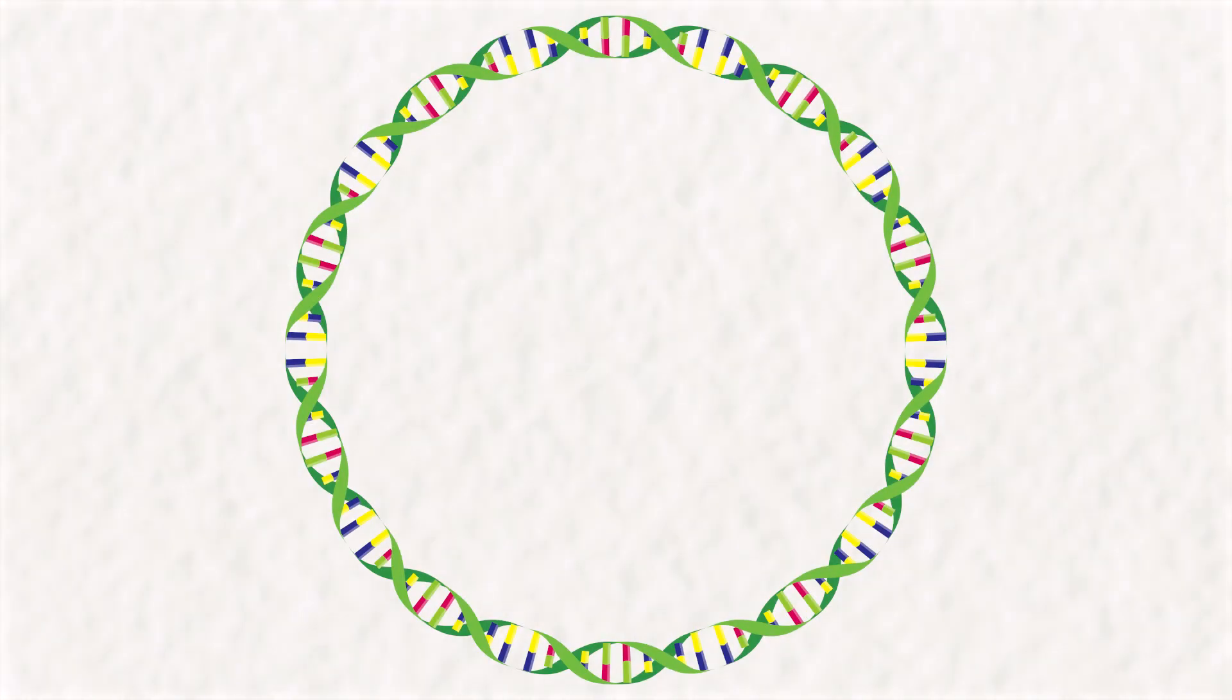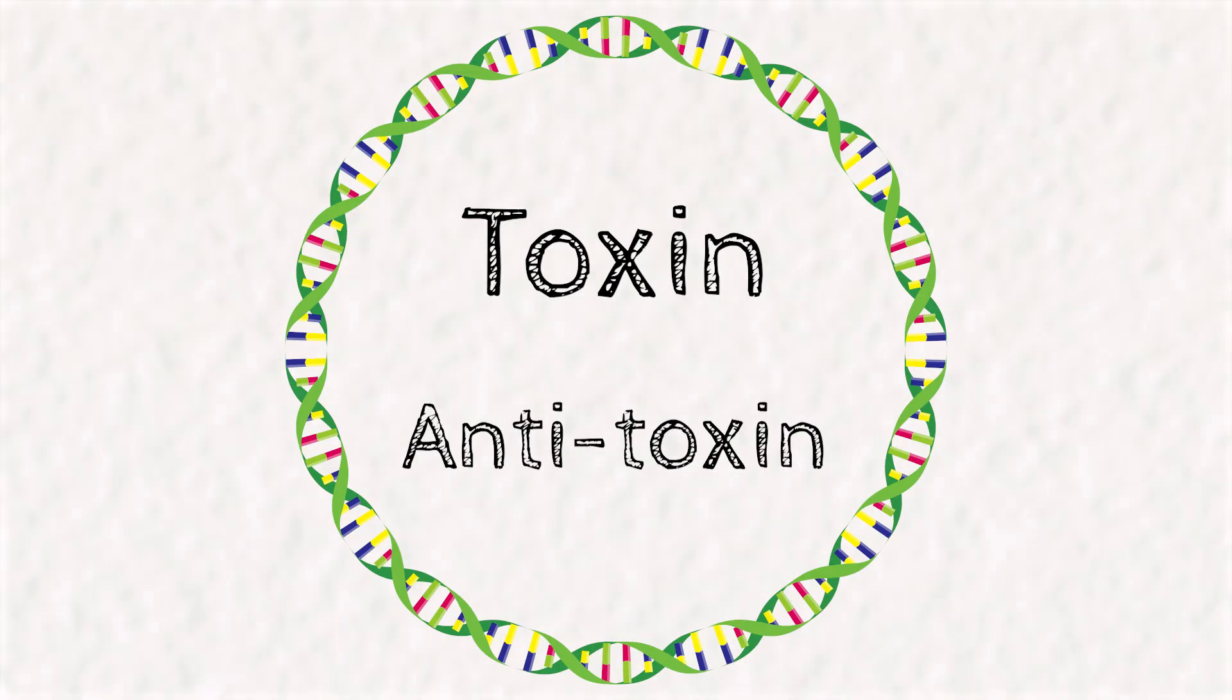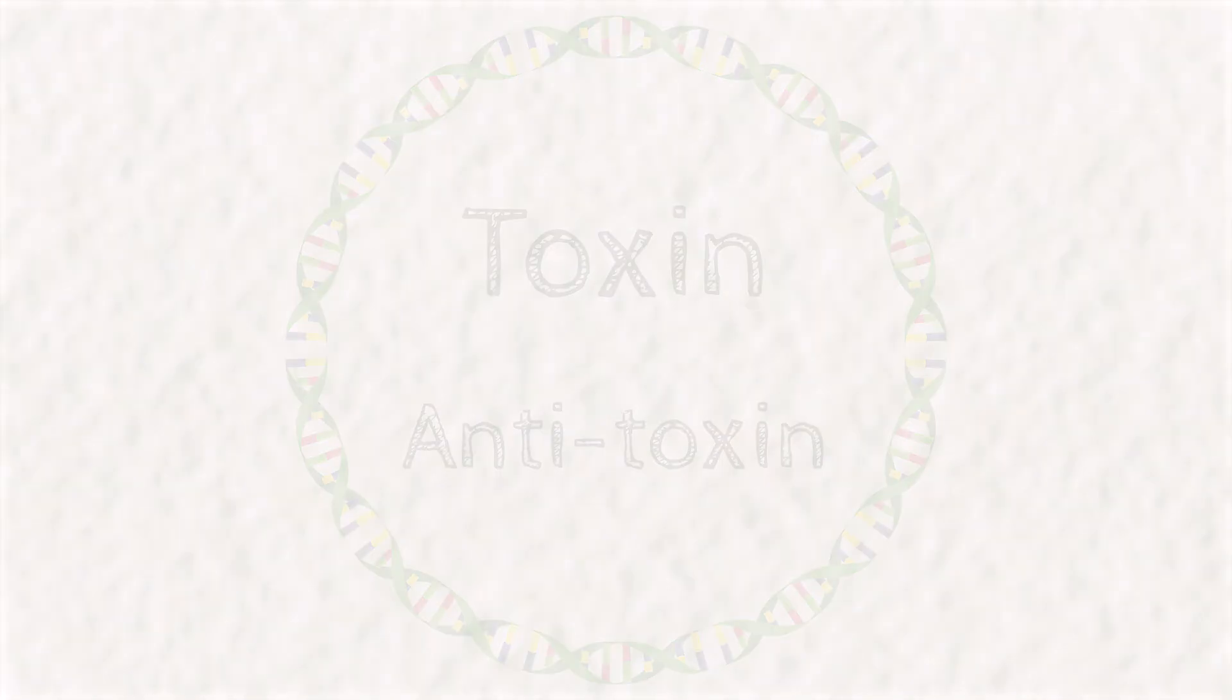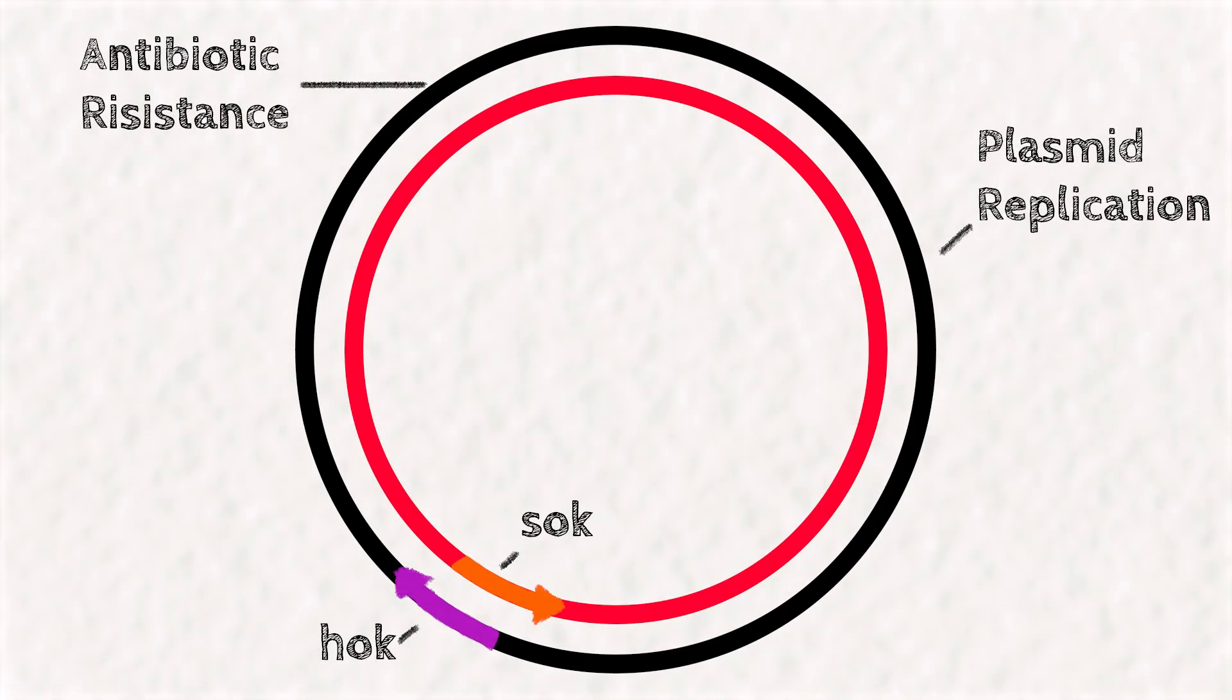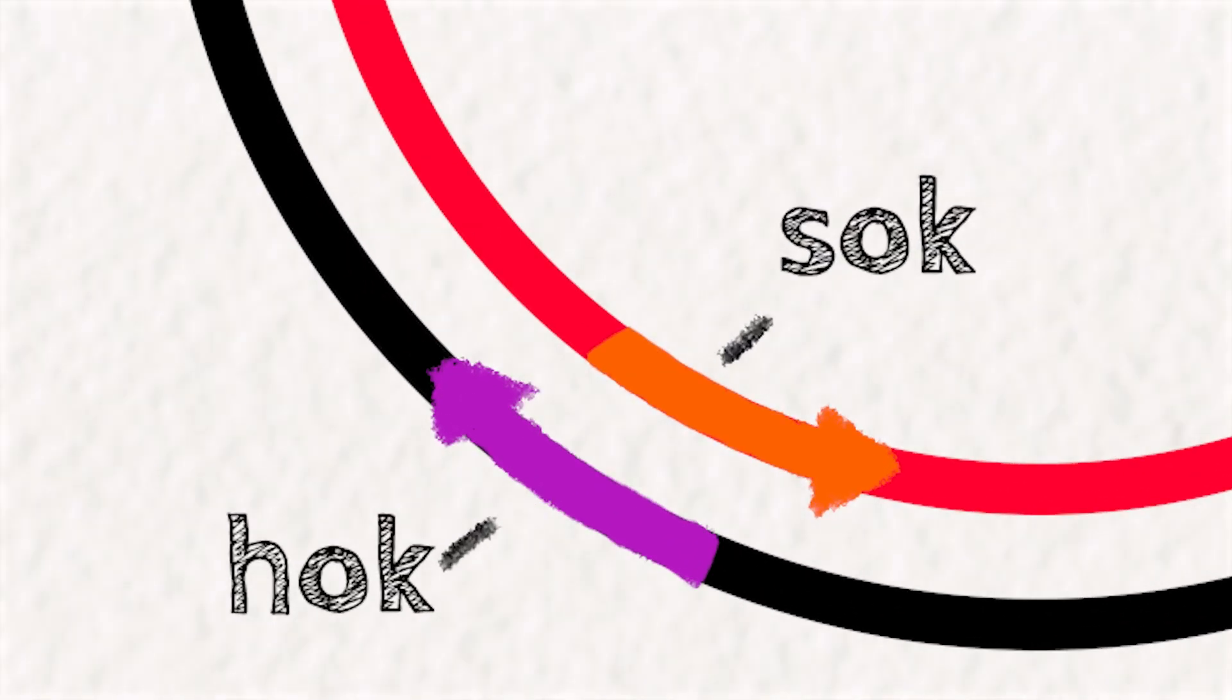Let's take a closer look as to what this addictive plasmid actually codes for. A basic toxin-antitoxin plasmid codes for two things, a toxin and an antitoxin. We'll use one of the most well-studied addictive plasmids as an example, the R1 plasmid found in E. coli. In addition to the normal stuff that plasmids tend to have, it also codes for two genes, HOC and SOC.